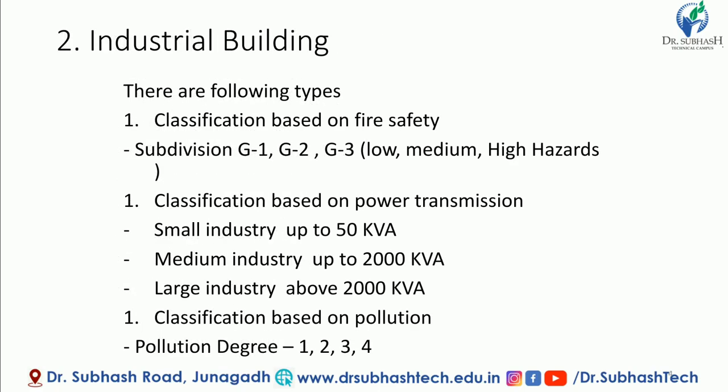Non-Industrial Buildings may be classified in different ways. First is classification based on fire safety. There may be three levels: low, medium, and high hazard. The first level, low, is called G1, in which hazard risk is very less. Medium level, G2, has average hazard risk. And G3 is the high hazard risk level.